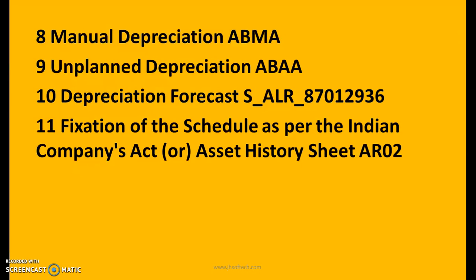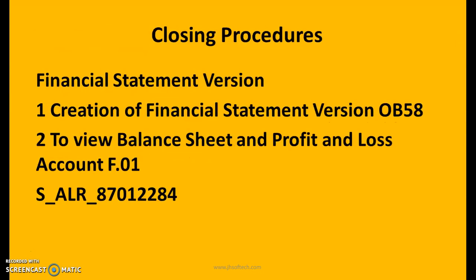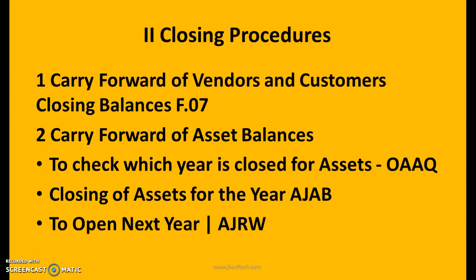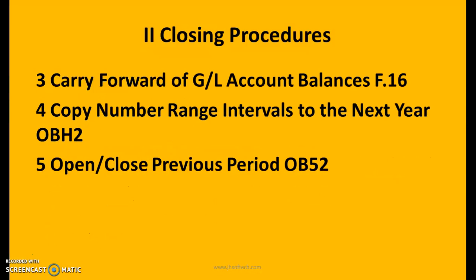Asset history sheet as per the Indian Companies Act: AR02. Closing procedures — creation of financial statement version: OB58. Review balance sheet and profit and loss accounts: F.01, S_ALR_87012284. Carry forward of vendors and customers closing balances: F.02. Check which year is closed for assets: OAOAQ. Closing of assets for the year: AJAB. Open next year: AJRW. Carry forward of GL account balances: F.16. Copy number range intervals to next year: OBH2. Open or close previous period: OB52.